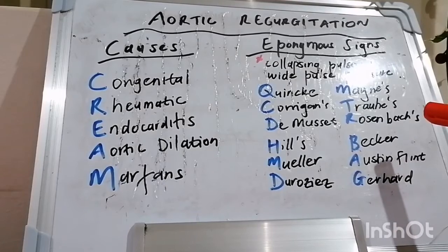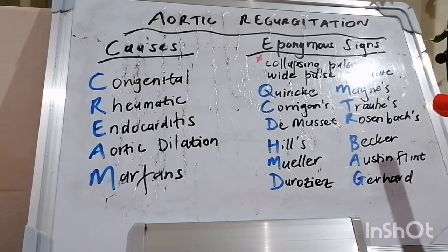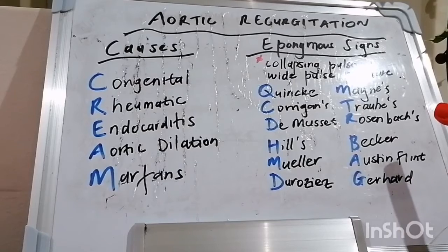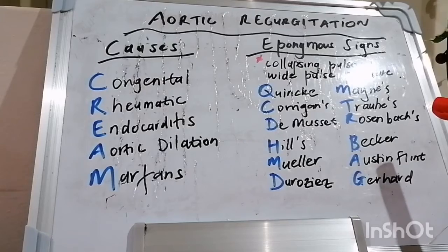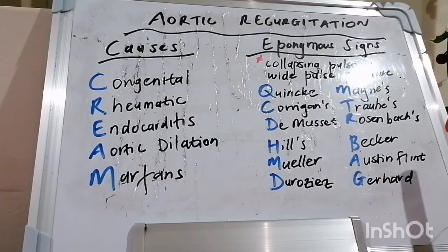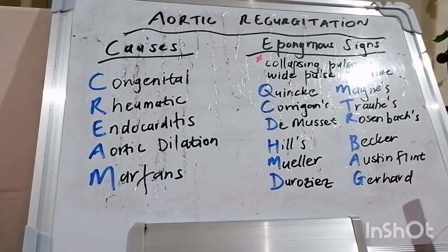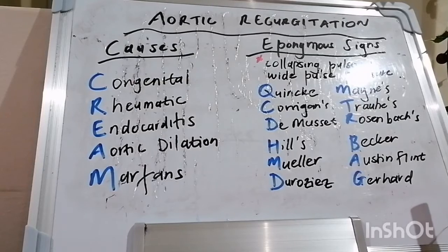Becker's sign refers to accentuated retinal artery pulsations. The infamous Austin Flint murmur refers to a short rumbling diastolic murmur, thought by Flint to be due to functional mitral stenosis caused by impinging of the aortic regurgitating jet on the anterior mitral valve leaflet. Gerhardt's sign speaks to a pulsatile spleen. Other eponymous murmurs include the Carey Coombs murmur of rheumatic mitral stenosis and the Graham Steell murmur of pulmonary regurgitation in pulmonary hypertension — both diastolic murmurs.